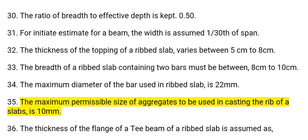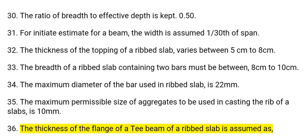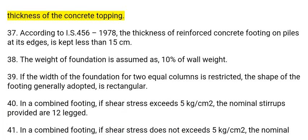35. The maximum permissible size of aggregates to be used in casting the rib of a slab is 10 mm. 36. The thickness of the flange of a T-beam of a ribbed slab is assumed as the thickness of the concrete topping.